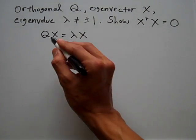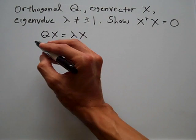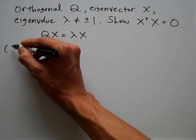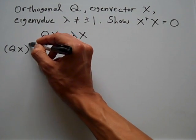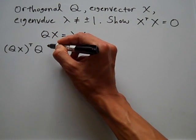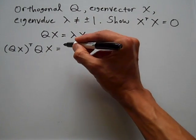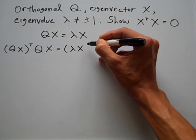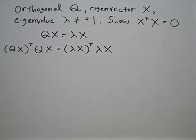I propose multiplying each side of this equation by its respective transpose. On the left, I'm going to have (QX) transpose times QX, and on the right side, I multiply by its transpose, so (lambda X) transpose times lambda X.